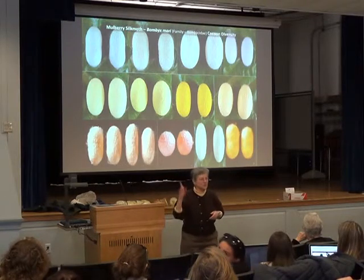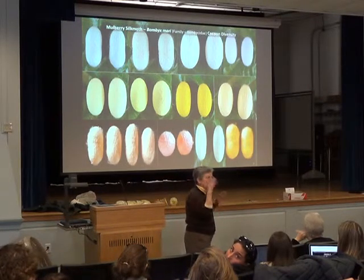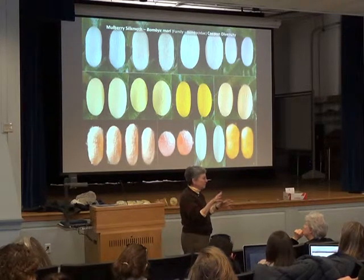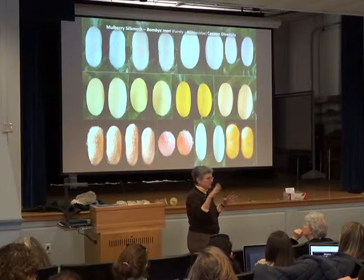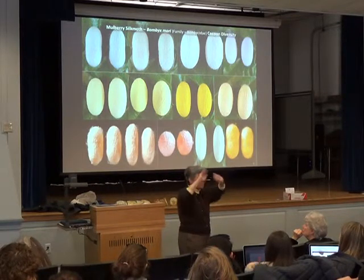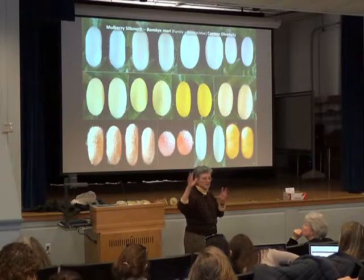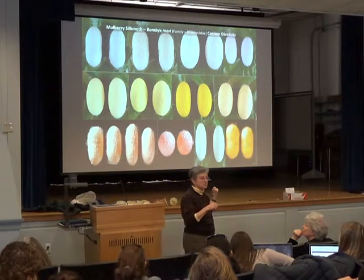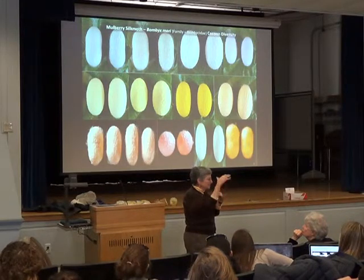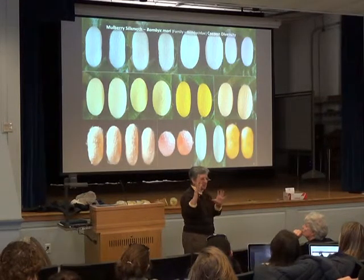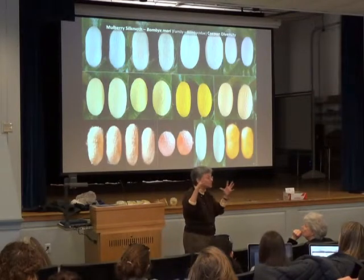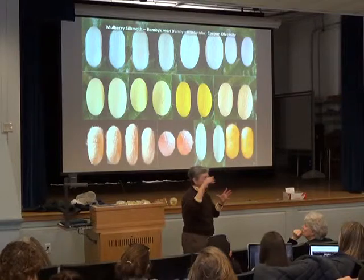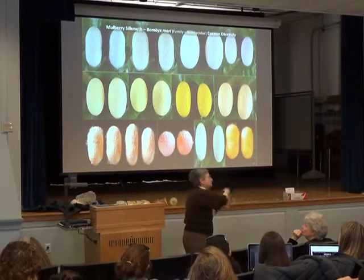The larva's spinning behavior is controlled genetically, as you saw in that picture with the very thin thread. When the lark is ready to go to the next stage, it attaches threads to some scaffolding — in nature it might curl a leaf around itself. We give it a spinning box to attach threads to. It makes a kind of scaffold, which we call a moose, and once it's ready it empties its gut and begins making figurates around itself.